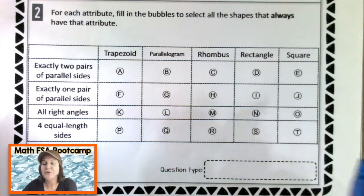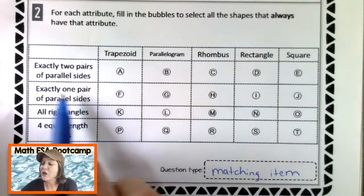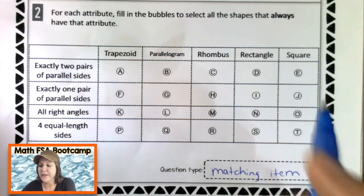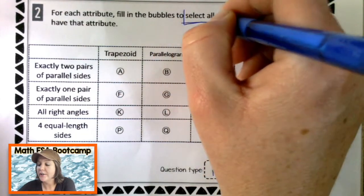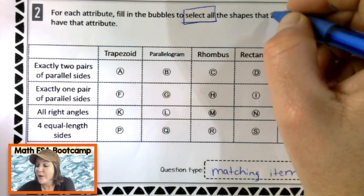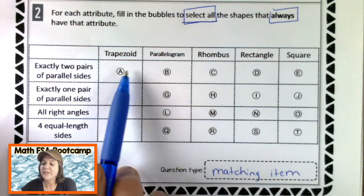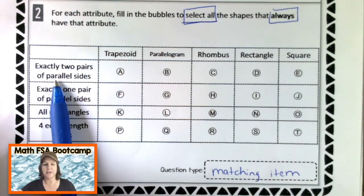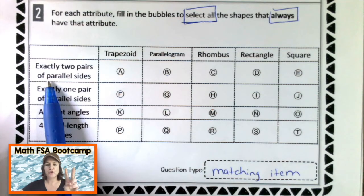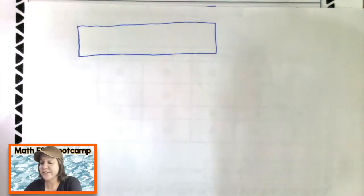All right, y'all. For number two. This is my favorite kind of question. This is a matching item. Why is it a matching item? Because there are rows, there are columns and we have to match them. All right. For each attribute, fill in the bubbles to select all the shapes that always have that attribute, that characteristic, that description. Okay. We're going to read what is in the row and then we have to decide if each one has that. Okay. Exactly.